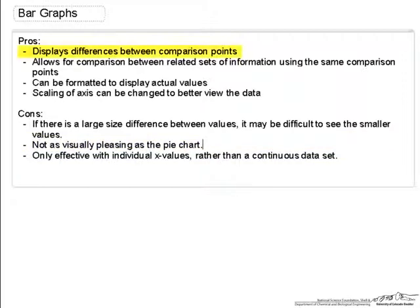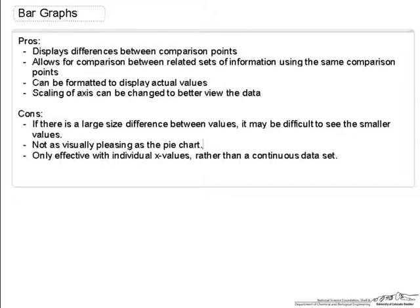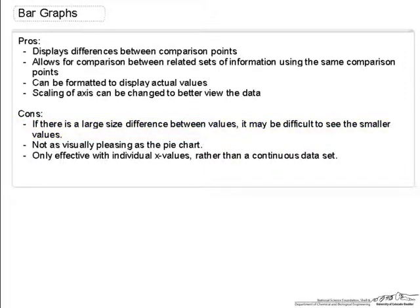For bar graphs, the pros are that it displays differences between comparison points, similar to a pie chart. It also allows for comparison between related sets of information using the same comparison points, like graphing in-state and out-of-state tuition on the same chart. It can be formatted to display actual values, though in my case I did not do that since with a large amount of data the numbers would have made it more confusing. You can also change the scaling of the axes to better view the data. A con of bar graphs is that if there is a large size difference between values, it may be difficult to see the smaller values, which is why I had a separate chart with different axis scaling.